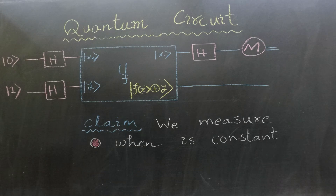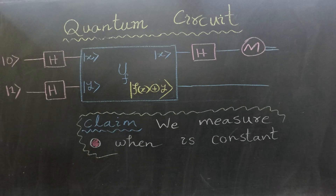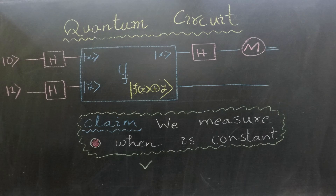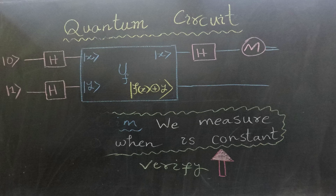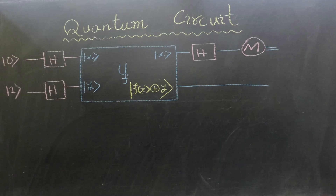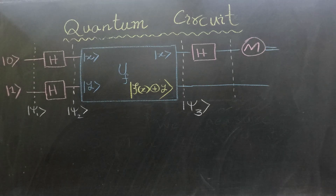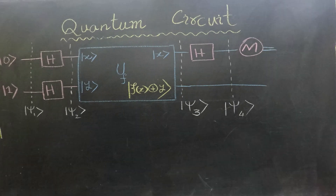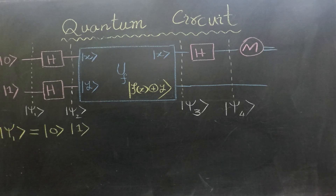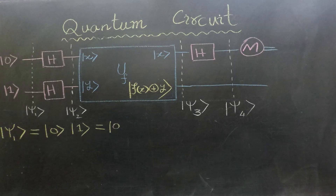Let's validate this claim. To aid in our verification we have divided the circuit into four different stages. The first stage is labeled as |ψ1⟩, the second stage as |ψ2⟩, the third stage as |ψ3⟩, and the final stage as |ψ4⟩. |ψ1⟩ is equal to the tensor product of |0⟩ and |1⟩, which can also be represented as |01⟩.